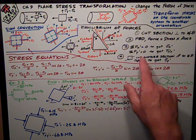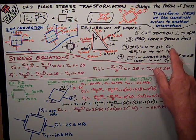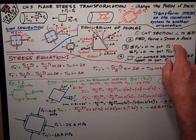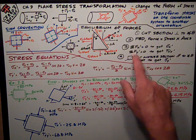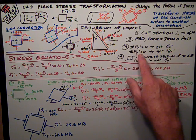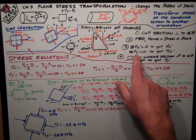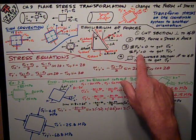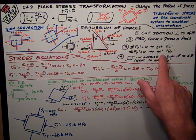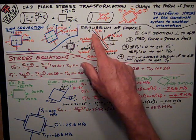I do a sum of forces in the x prime direction and I'll get sigma x prime because the delta A's cancel out. Same thing, do a sum of forces in the y prime direction is zero. And I can get tau x prime y prime.